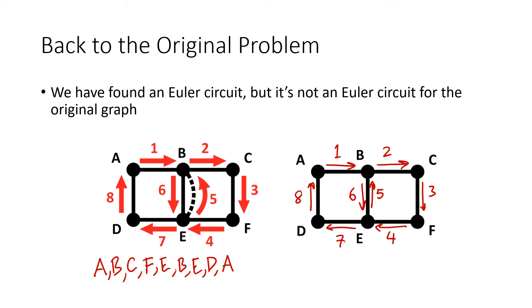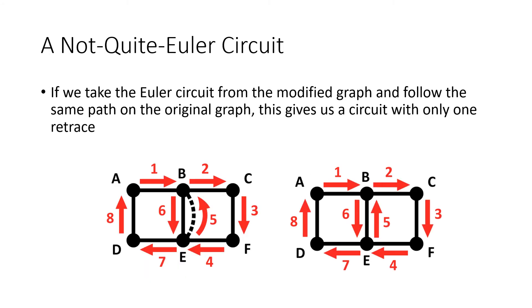So the graph on the left is an Euler circuit, but not for the original graph, for our new modified graph. The path on the right, that's not an Euler circuit, but it is a circuit that only has one retracing. So that's how we connect these things together. It's not quite an Euler circuit, but we can take the Euler circuit that we got on our modified graph and put it on the original graph, and every duplicated edge that we found is going to be a retrace of our steps.